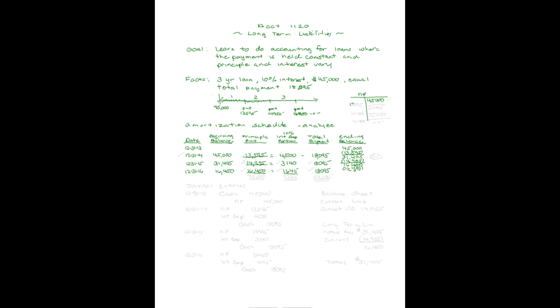Let's take a look at what happened in the notes payable account. It started at $45,000. After our first payment of $13,595, it went down to $31,405. After our next payment of $14,955, that balance went down to $16,450. And that's what our last payment took it down by, and we amortized it down to zero — so you can see what's happening in the general ledger.